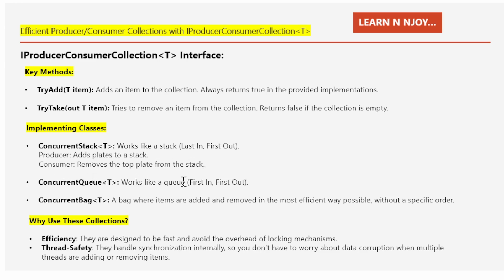ConcurrentQueue works like a queue — first in, first out — like people standing in a line where the first person in is the first to leave. ConcurrentBag is a collection where items are added and removed in the most efficient way possible without a specific order. The two main benefits are efficiency — designed to be fast and avoid locking overhead — and thread safety, since synchronization is handled internally.